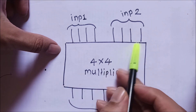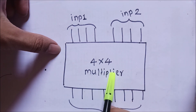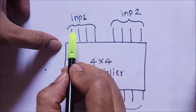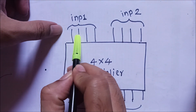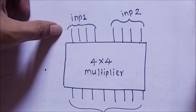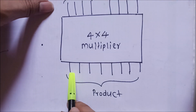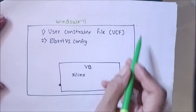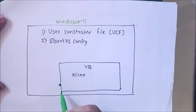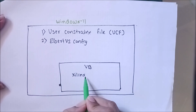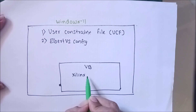In this experiment we are going to implement a four by four multiplier which has two inputs: input one and input two. Input one consists of four bits, input two consists of four bits, and the output is a product which consists of eight bits. We are using Windows 11 on our computer system, with VirtualBox installed, and inside VirtualBox we are using Xilinx.